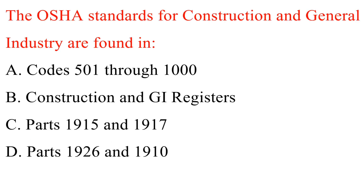Question. The OSHA standards for construction and general industry are found in: A. Codes 501 through 1000. B. Construction and GI registers. C. Parts 1915 and 1917. D. Parts 1926 and 1910. Answer: D. Parts 1926 and 1910.